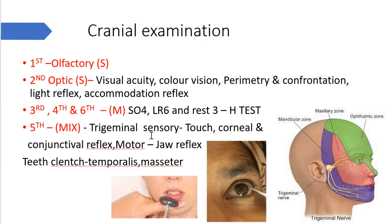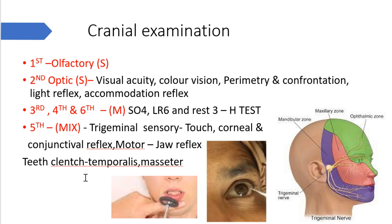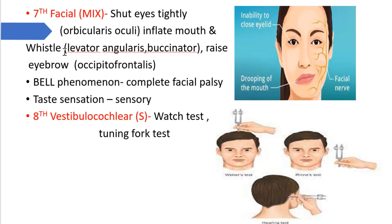The fifth nerve — trigeminal — is a mixed nerve. For the sensory component, all three divisions are tested by touching with cotton wool to see whether touch is felt. For trigeminal nerve testing, corneal and conjunctival reflexes are also tested. For the motor component, the jaw jerk reflex is performed: place a thumb on the chin and hit it with a hammer with the mouth open — the response is closure of the mouth. You can also ask the subject to clench their teeth.